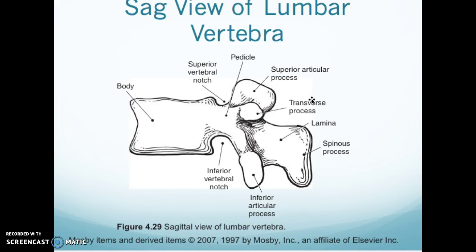This is a sagittal view of the lumbar spine. Here's your body. You have your superior vertebral notch with your pedicle, your superior articular process with your transverse process, your lamina, your spinous process, your inferior articular process, and your inferior vertebral notch.